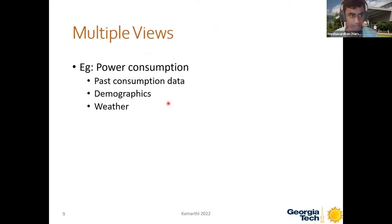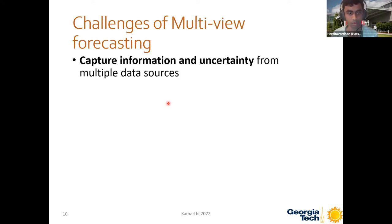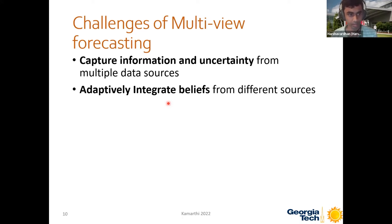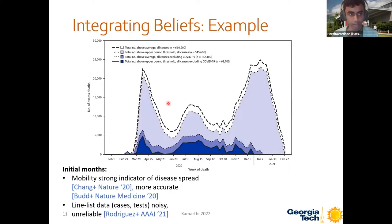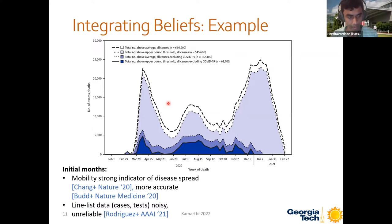What are the challenges of capturing these multiple data sources and modalities, which we call data views? We first have to capture information and uncertainty from each of the multiple data sources, integrate this information and uncertainty from different sources, and finally produce well-calibrated forecasts. For example, during the COVID-19 pandemic initially — during the first three or four months — many studies indicated that mobility was a strong indicator of disease spread, whereas line list data, especially in the US, was unreliable. Line list data includes data released by public health agencies like CDC, like number of cases and number of tests done.